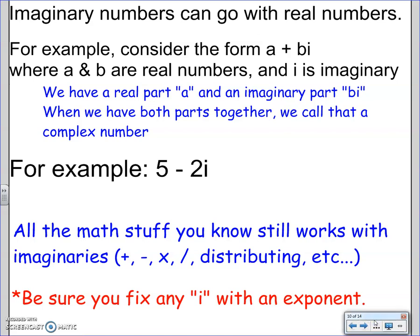Imaginary numbers can go with real numbers. For example, consider the form A plus BI, where A and B are real numbers, and I is the imaginary part. We have a real part, which is the thing without I, usually it's A, and we have the imaginary part, which is BI. When we have both parts together, we call that a complex number.